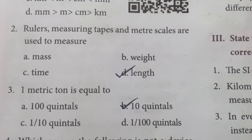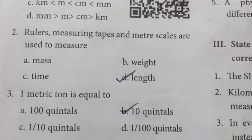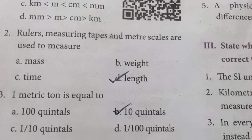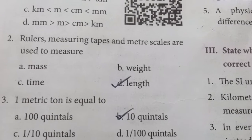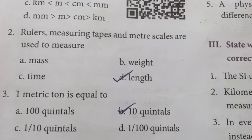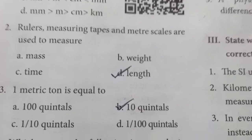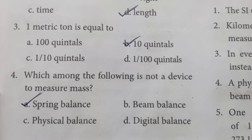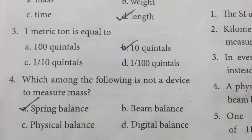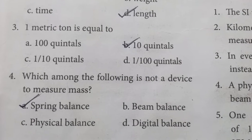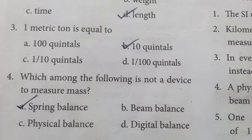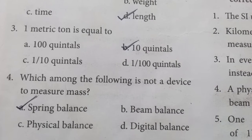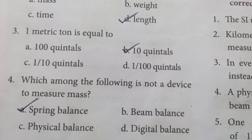Second: rulers, measuring tapes, and meter scales are used to measure the length of any objects. One metric ton is equal to 10 quintals. Among the following — beam balance, physical balance, digital balance — all three are used to measure mass, but spring balance is not used to measure mass.